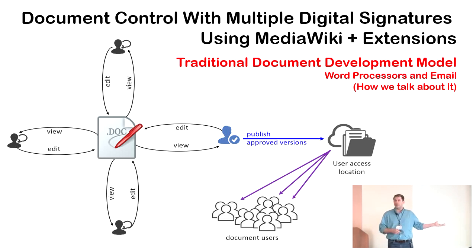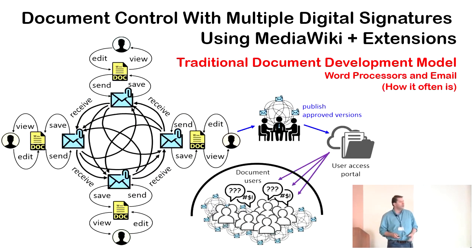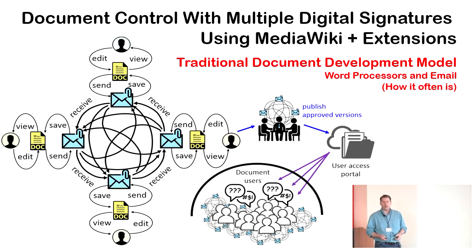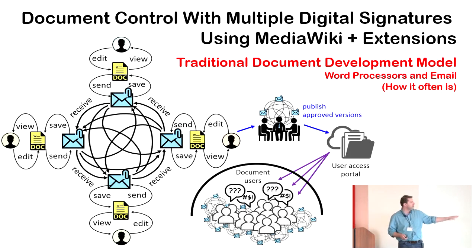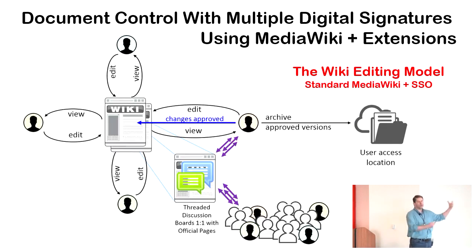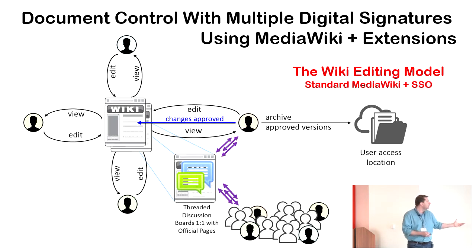This is what it's supposed to look like — this is how we talk about it. But anybody who's been doing this for a number of years knows that things get really messy sometimes when documents are being emailed. At the end of that process there's a complicated stage where users have had pretty much no insight. This is the argument for why we want to move to a more honest document development model, as all of us are MediaWiki fans and supporters.